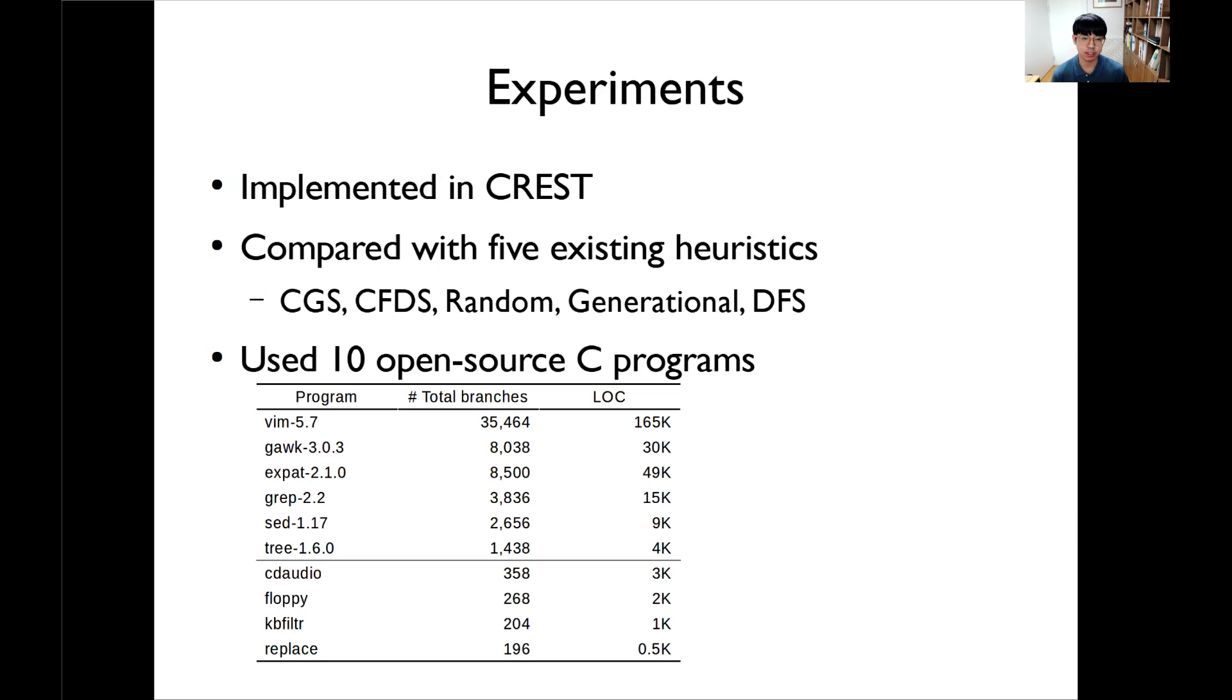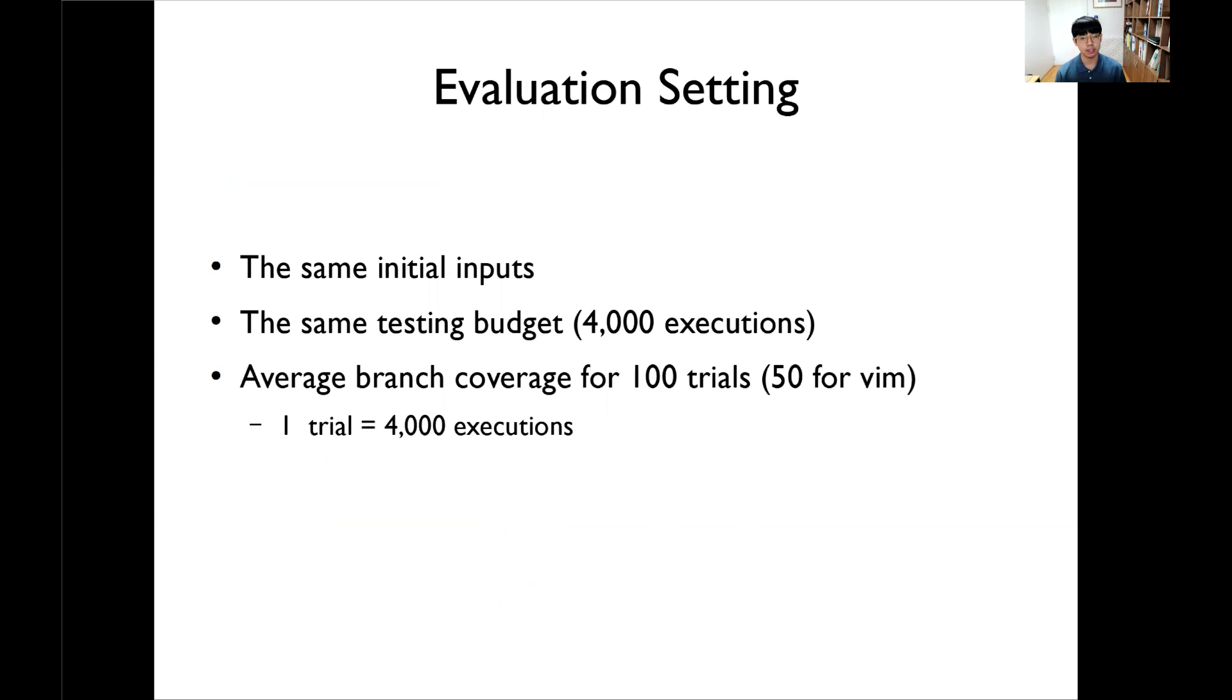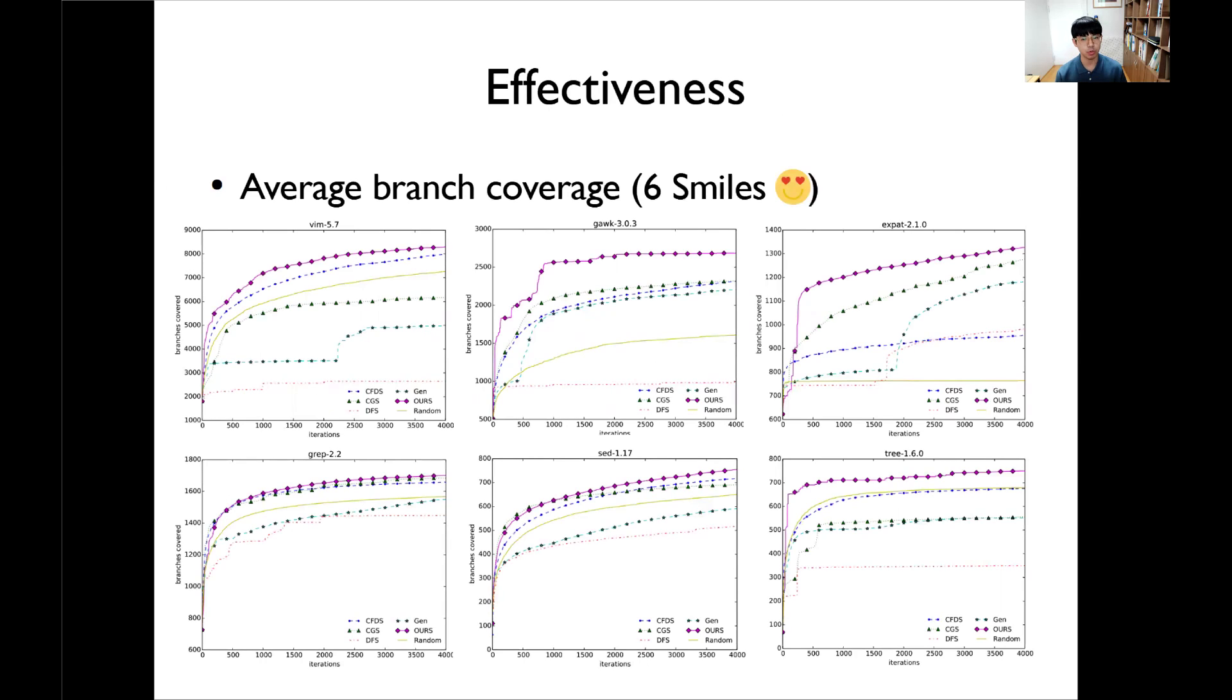Let me present the experimental results. We implemented our approach in CREST, a concolic testing tool. We compared our heuristic with five existing search heuristics. And we used 10 open source C programs widely used in concolic testing research. In this evaluation setting, we used the same initial input for all programs for fair comparison, and we used the same testing budget of 4,000 program executions. The performance of each heuristic is averaged over 100 trials. And this is one of my main results. This graph shows that the average performance of each heuristic on six large benchmarks. And our heuristics in purple consistently achieve the highest branch coverage on all benchmarks.